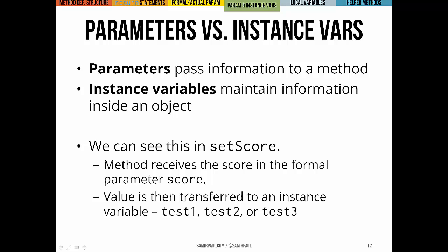You can see this in setScore. The formal parameter that we take in, score, all that's doing is sending in a value for this method. Then we take that value and we transfer it to one of the instance variables, which would be either test1, test2, or test3. Those we actually remember.